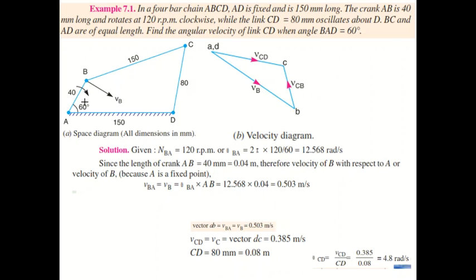You have to draw the diagram according to the given dimensions. If you want to use scaling, you can reduce all dimensions equally. For example, if you draw AB as 20 mm (2 cm), then draw BC as 75 mm (7.5 cm), CD as 40 mm (4 cm), and AD as 75 mm (7.5 cm). Scale everything equally and draw the space diagram first.